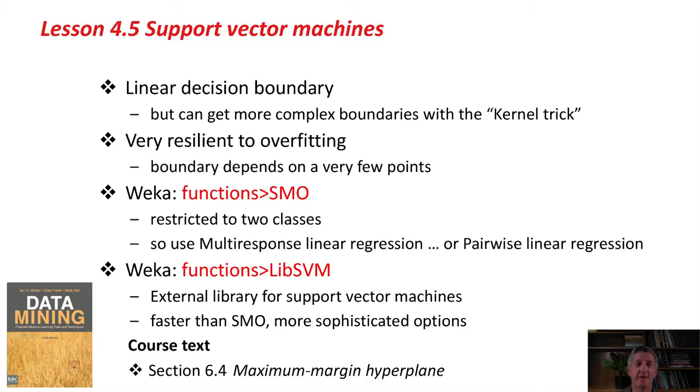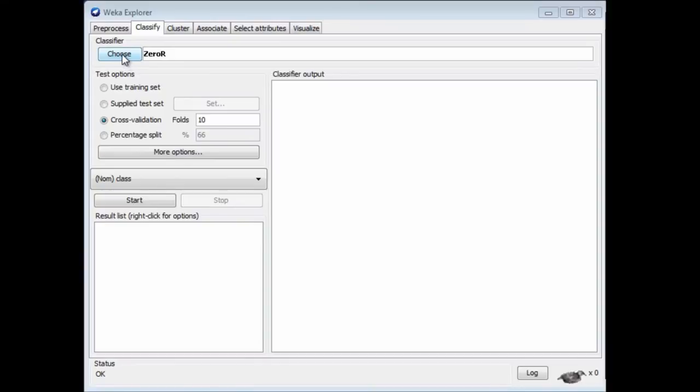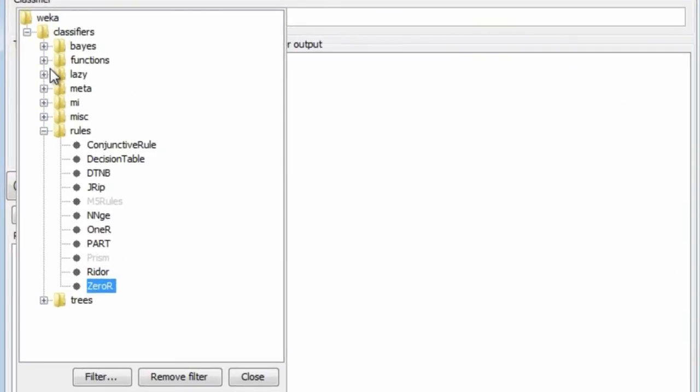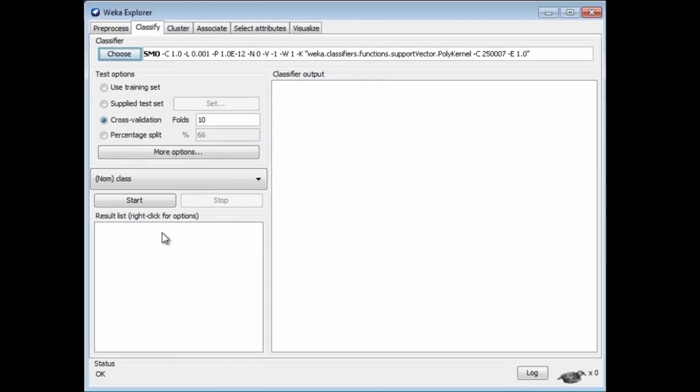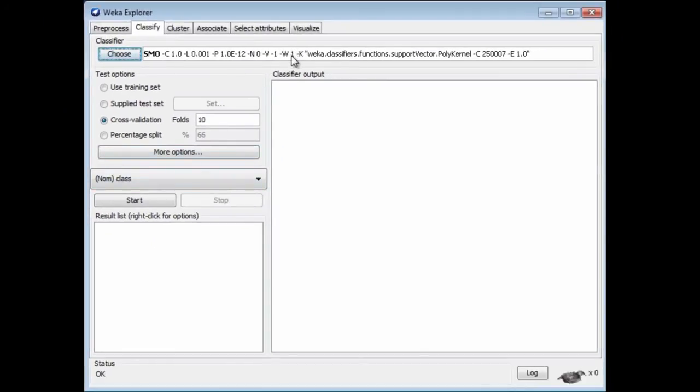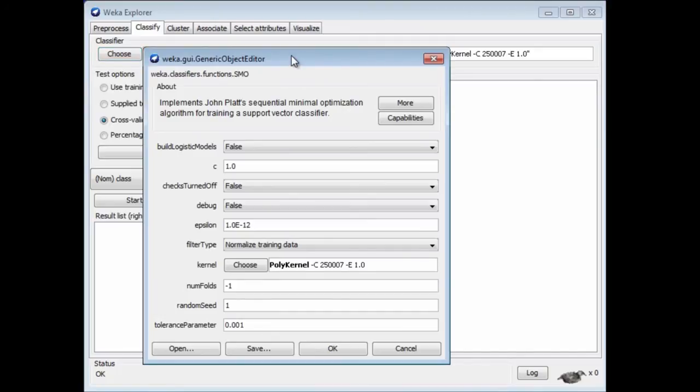In Weka, there's a couple of implementations of support vector machines. We could look in the functions category for SMO. If I look in functions for SMO, that implements an algorithm called sequential minimal optimization for training a support vector classifier. There are a few parameters here, including, for example, the different choice of kernels. You can choose different kernels, play around and try out different things, a few other parameters. Actually, the SMO algorithm is restricted to two classes, so this will only work with a two-class dataset.